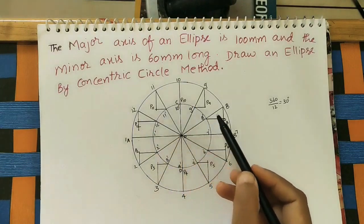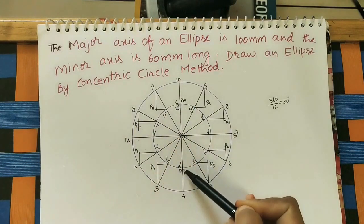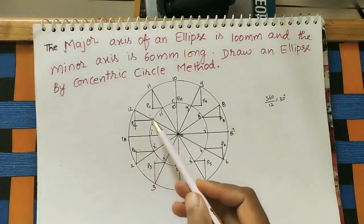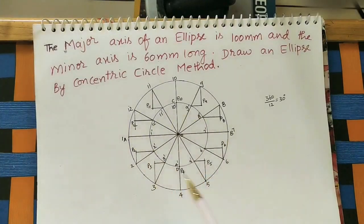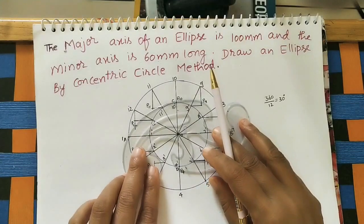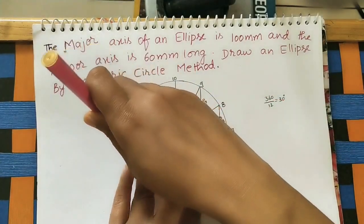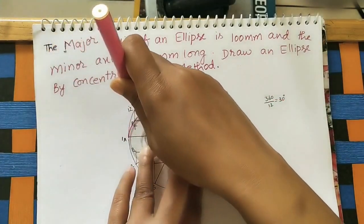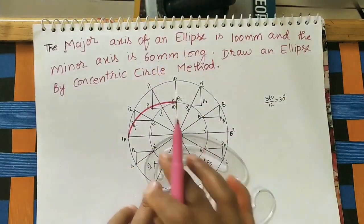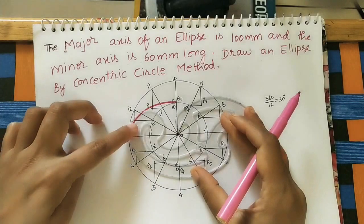Join all the P points through A, B, C, and D to get the ellipse. For joining all these points, use the French curve so that it is easy to draw the ellipse. Now join all these points, and for the other side reverse the French curve and join the points.